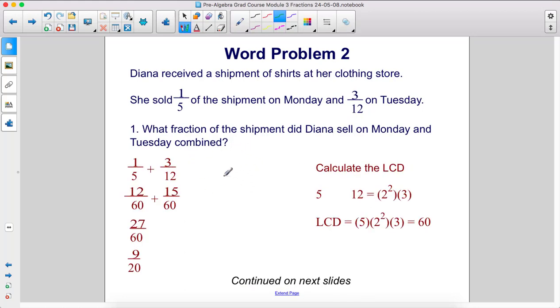For problem one, we need to add these two fractions together, which means that we need a lowest common denominator. First, we calculate the LCD. 5 is a prime factor, so it's already done.